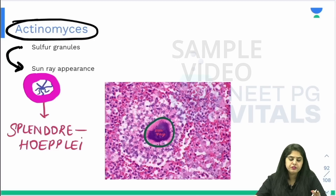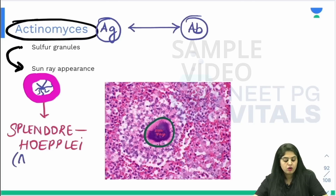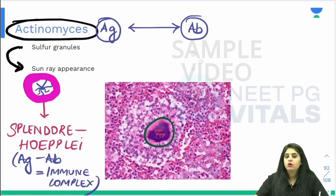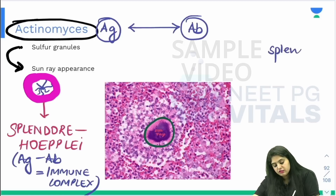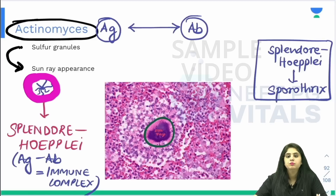So if I want to draw it: there is a purple sunray appearance, and all around it there is a pinkish color — this pinkish color phenomenon is known as the Splendore-Hoeppli phenomenon. What is Splendore-Hoeppli? Actinomyces is obviously an antigen, and along with Actinomyces, if an antigen enters the body you will make antibodies. So Splendore-Hoeppli phenomenon is nothing but aggregates of antigen-antibody — immune complexes getting deposited — making that pinkish halo around the organism. A similar Splendore-Hoeppli phenomenon is also seen in a fungus called Sporothrix.